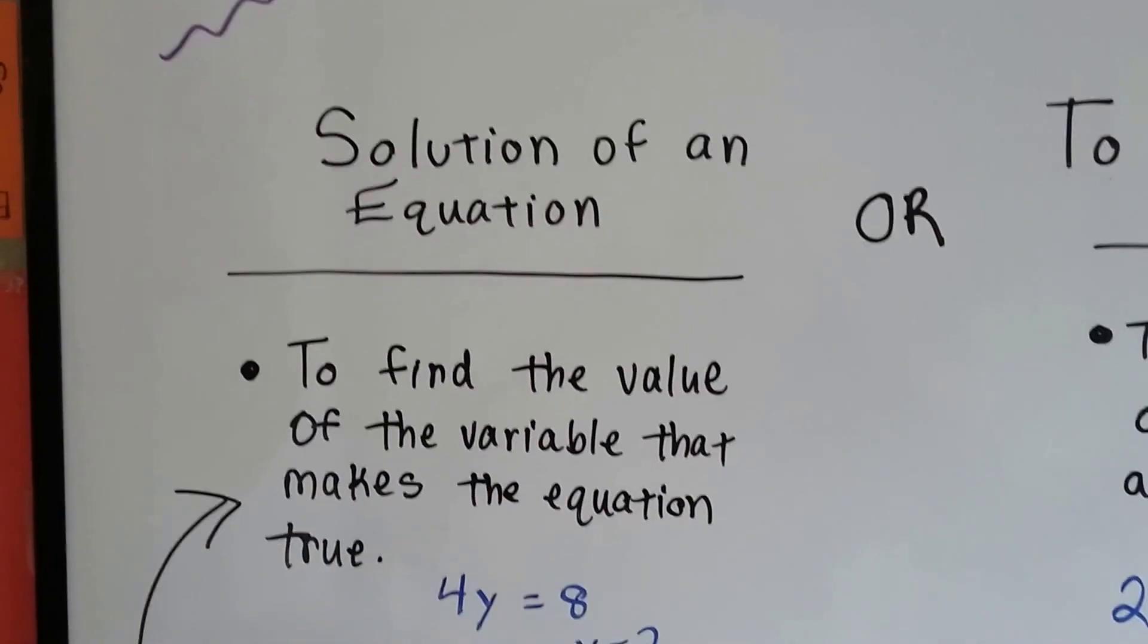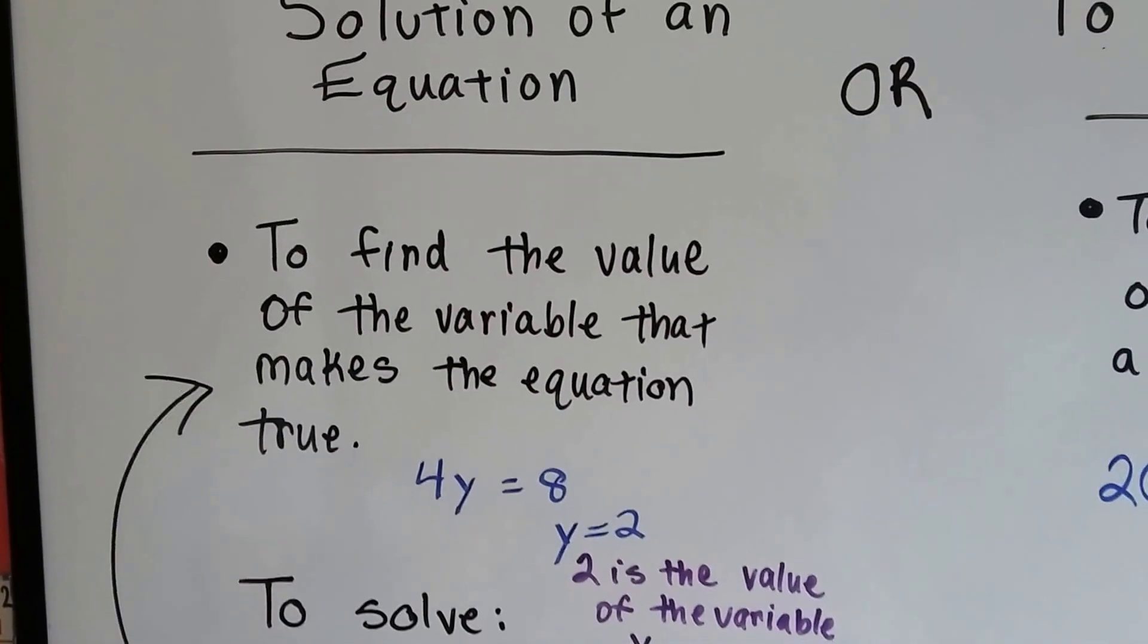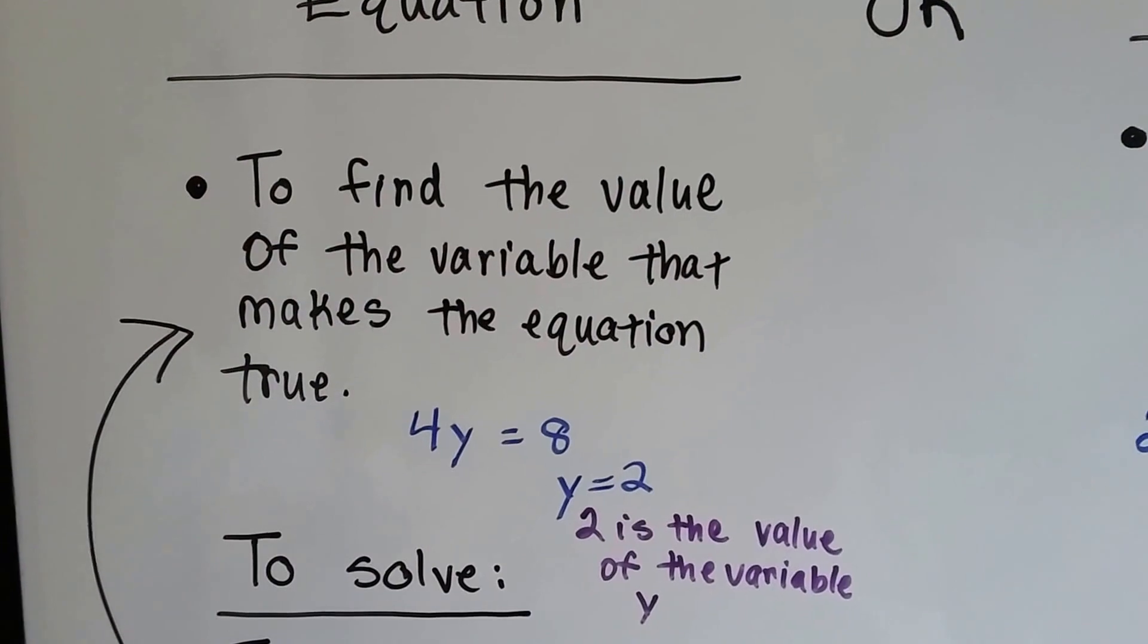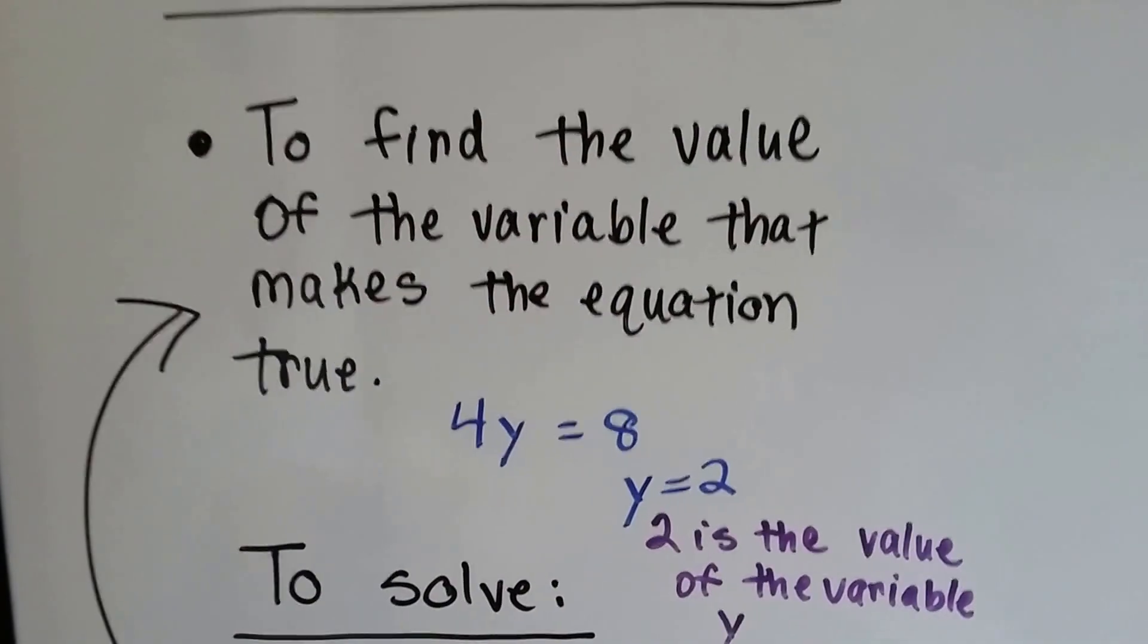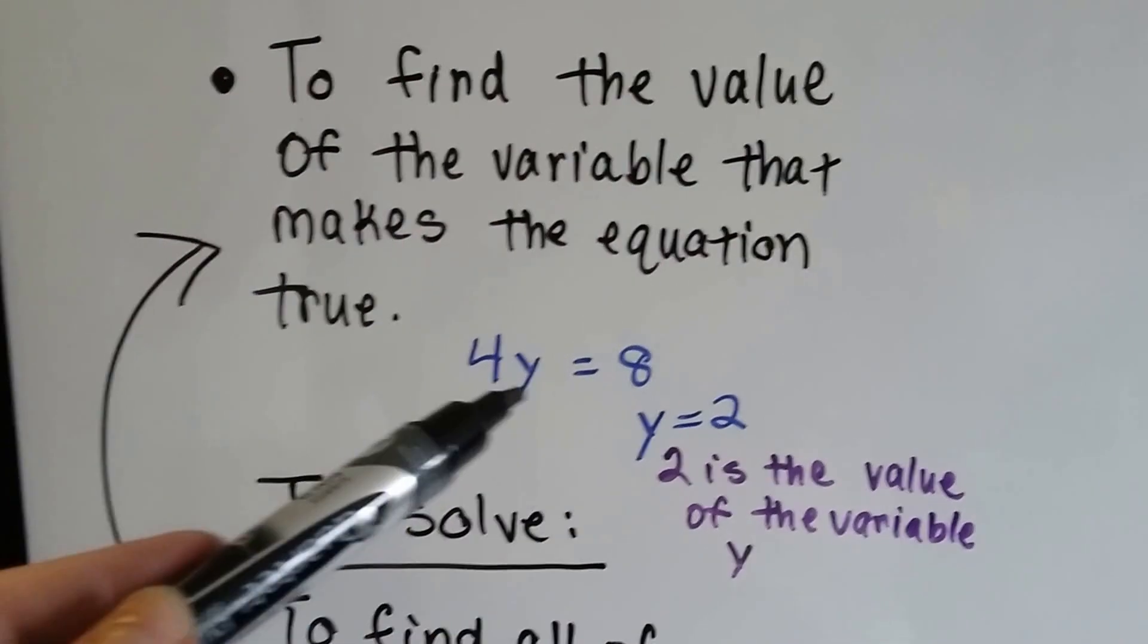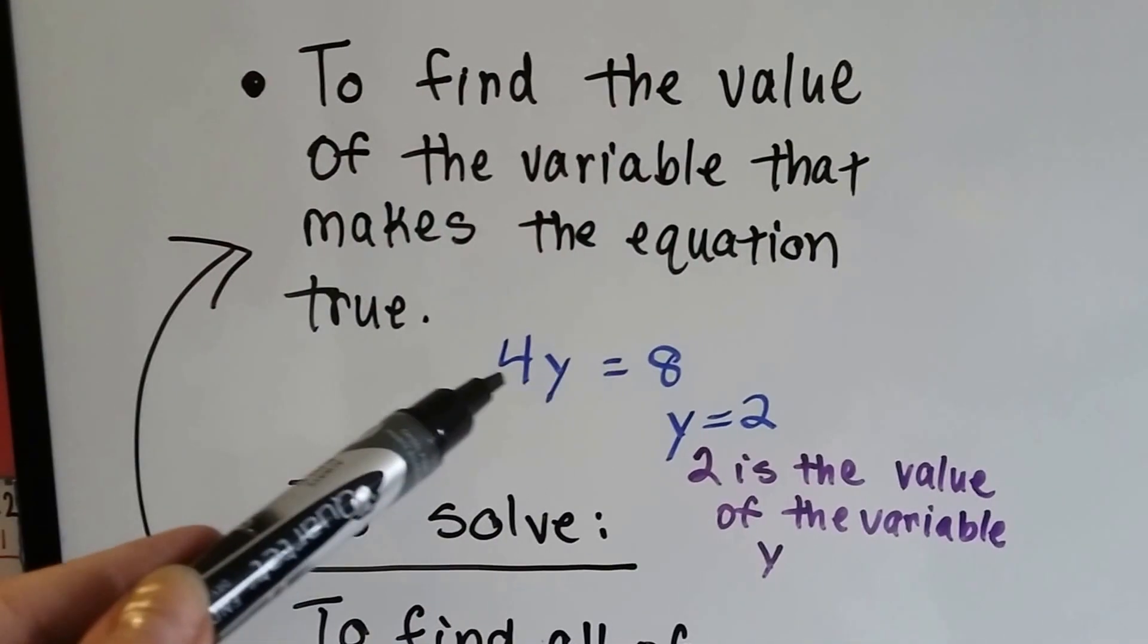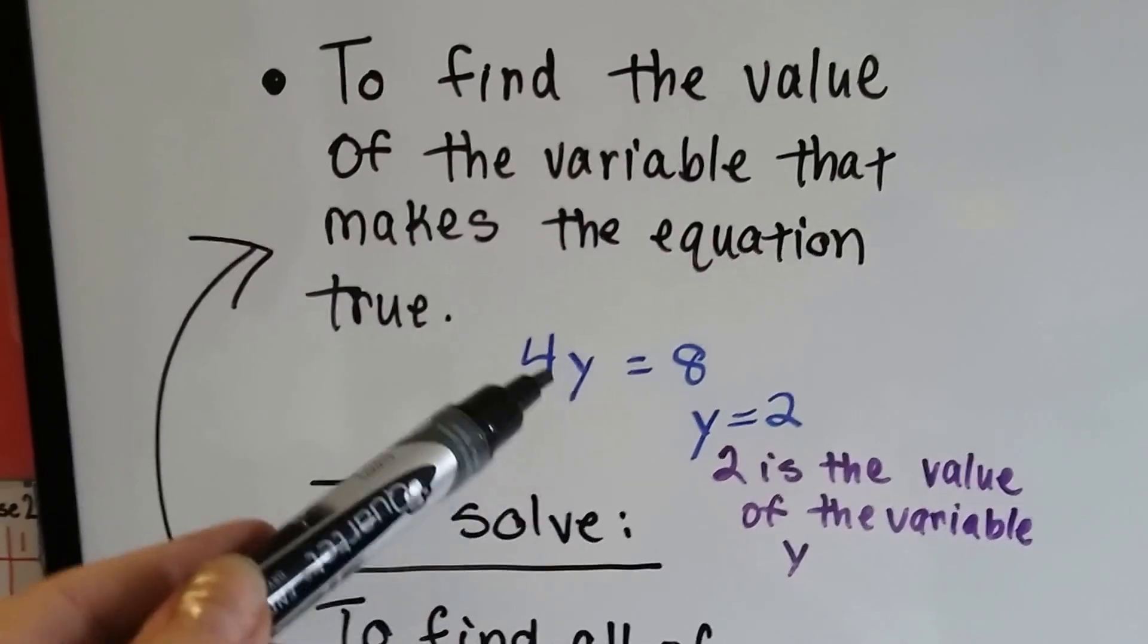Well, the solution of an equation, as we just learned in our previous videos, means to find the value of that variable that makes the equation true. If the equation is 4y equals 8, then y has to equal 2 because 2 is the value of the variable y that will make this true. 2 times 4 is 8. See? It's got to be 2.